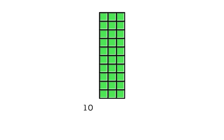Let's look at one more array. This array is 10 tall and 3 wide, so this array represents adding 10 three times, or 10, plus 10, plus 10. When we count by 10, we have 10, 20, 30. So this array shows 10 times 3, which is equal to 30.